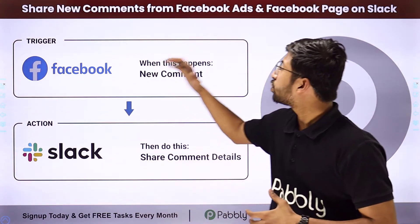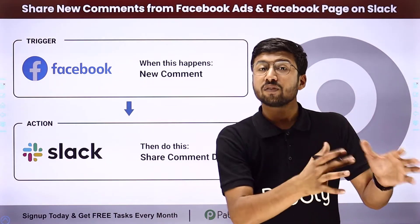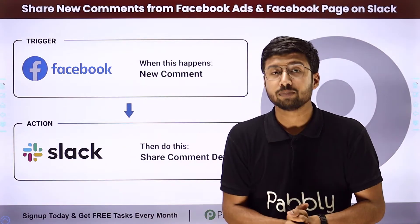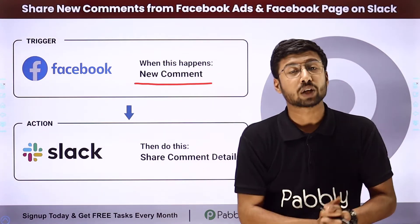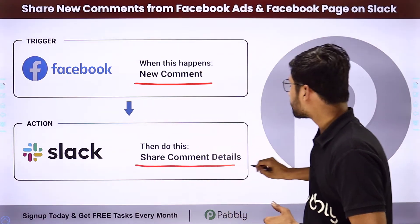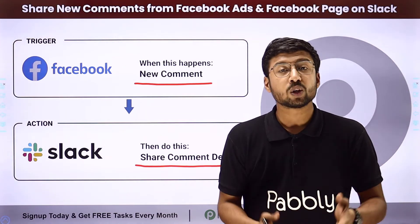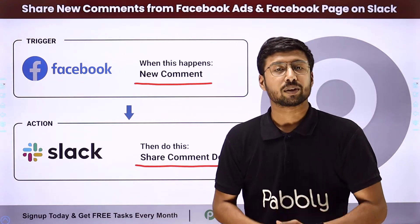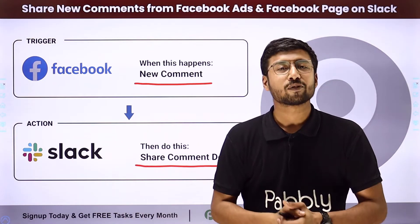In this video, we are going to learn how to share new comments from Facebook ads and Facebook page on Slack. If you're running some Facebook ad or if you're having a Facebook page, this automation is going to help you a lot, as well as your team members. Whenever we receive a new comment on our Facebook ads or on the Facebook page, automatically within a few seconds, the same comment details will be shared as a message on our Slack channel with your team members. Your team members will always be notified of new comments and they can quickly reply to them as well, boosting your customer or user engagement. If you want to know how you can set up this kind of automation, just come with me to my screen.